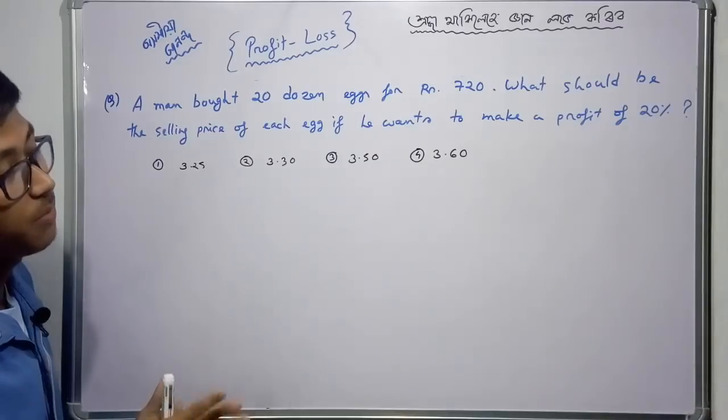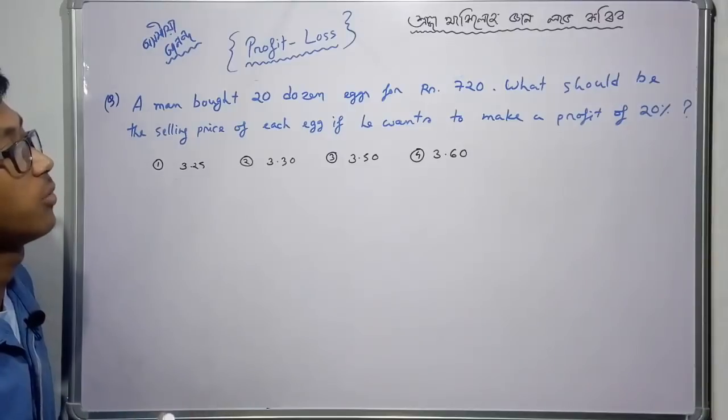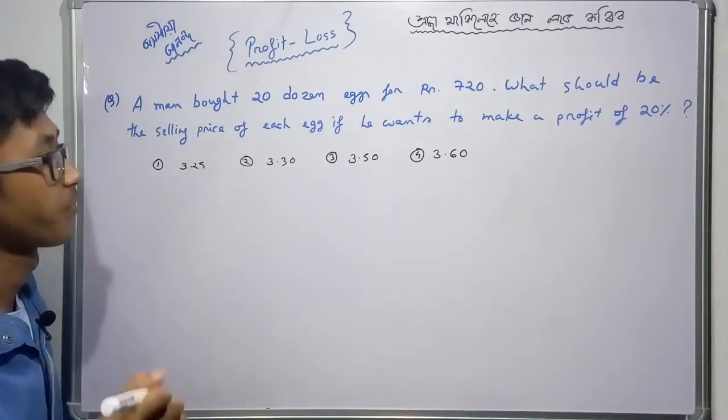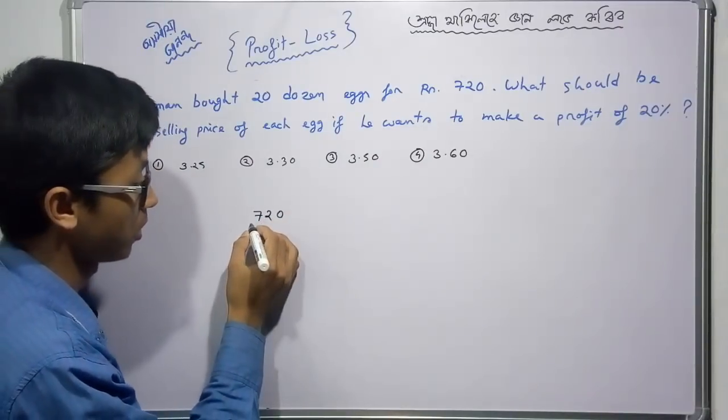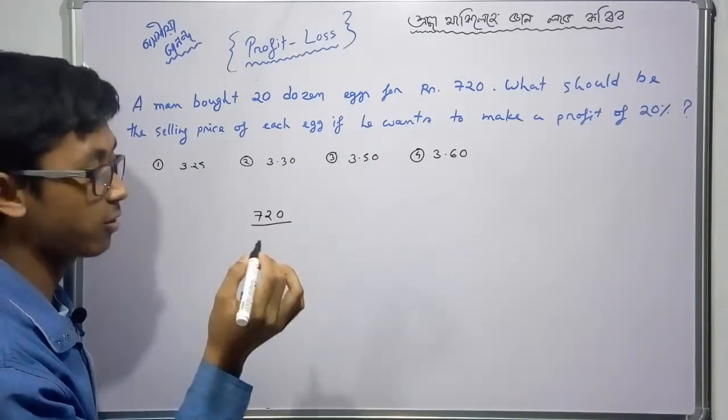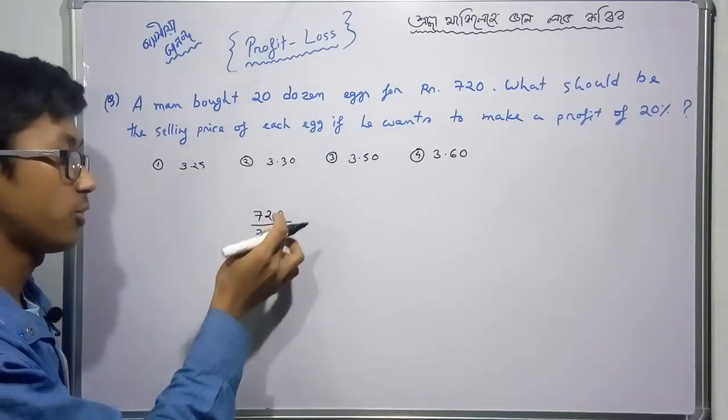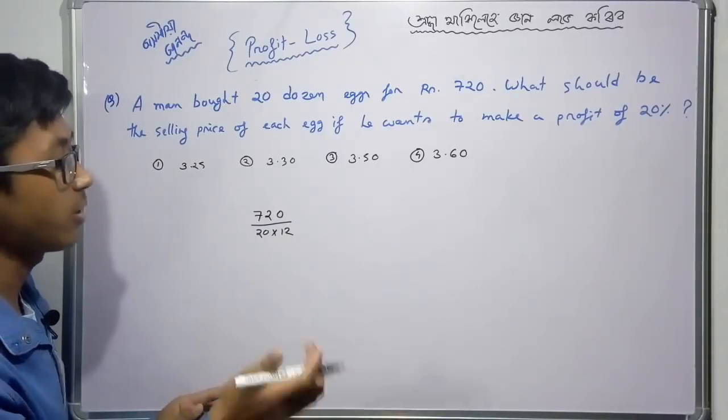20% profit is associated with the price of each egg. Now, you can buy 20 dozen eggs for Rs. 720. So the price per dozen is 720 divided by 20. If we calculate the price of each egg, then we divide by 12.